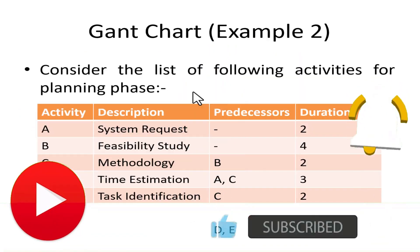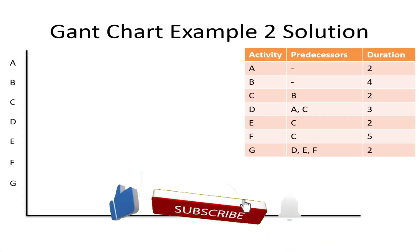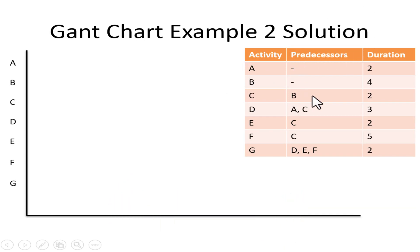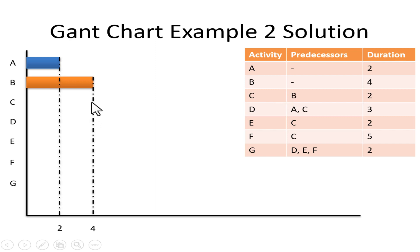Now let's look at a more complex Gantt chart example. We have activities with predecessors and durations listed. We begin with activities that have no predecessors: A and P, both starting from the Y axis. A has a duration of 2 and P has a duration of 4. Then we go to activity C, which depends on P, so C begins after P ends.